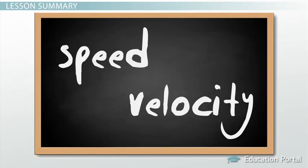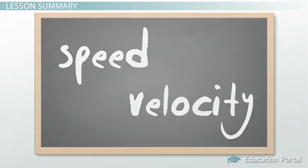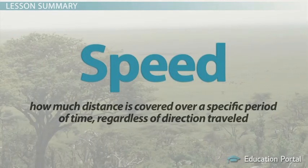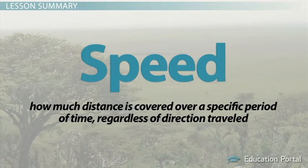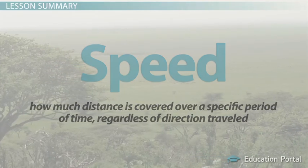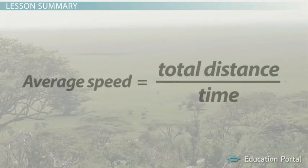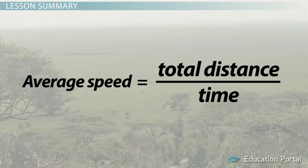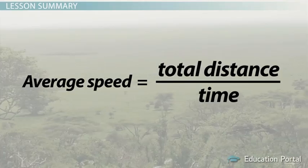Let's review. Speed and velocity are related concepts in physics. Speed is how much distance is covered over a specific period of time, regardless of direction traveled. Speed is a scalar quantity and can be calculated by the following equation: average speed equals total distance divided by time.